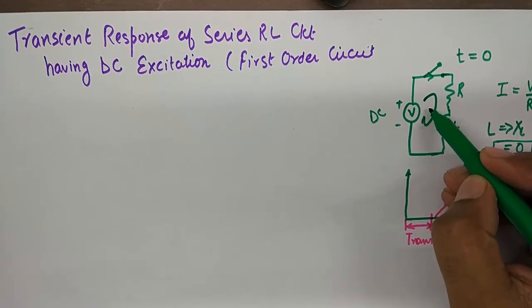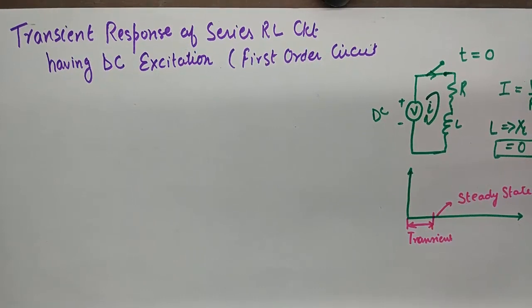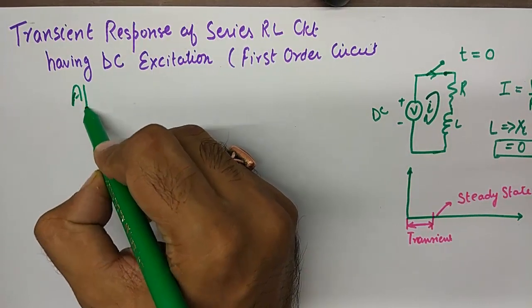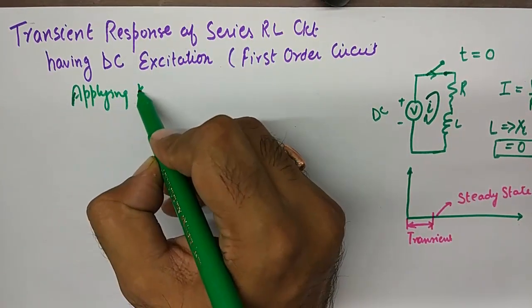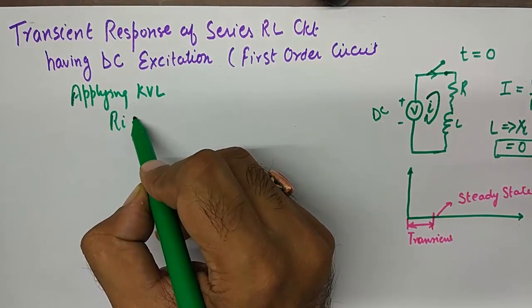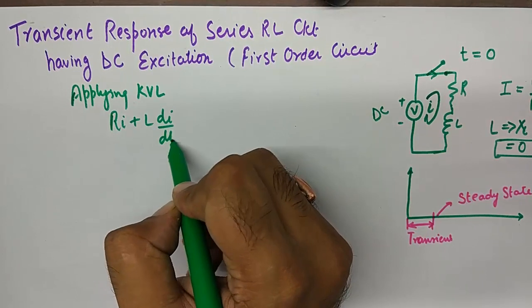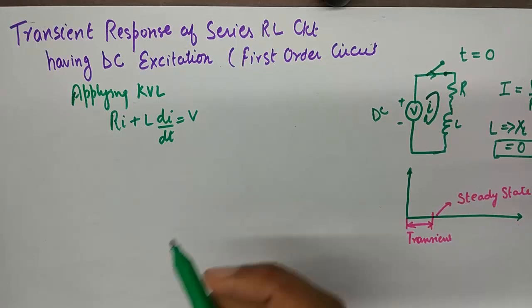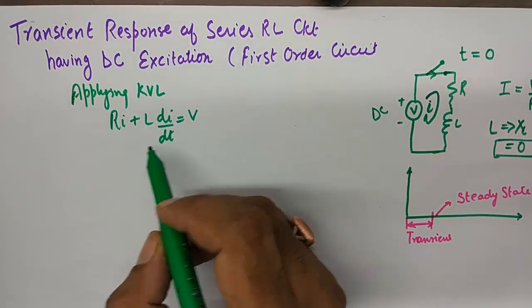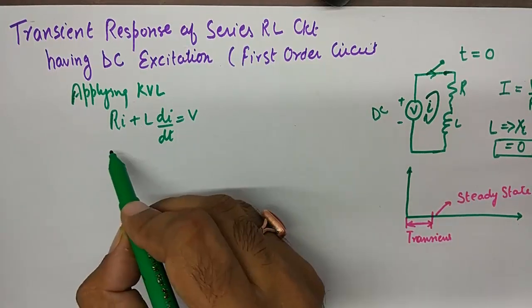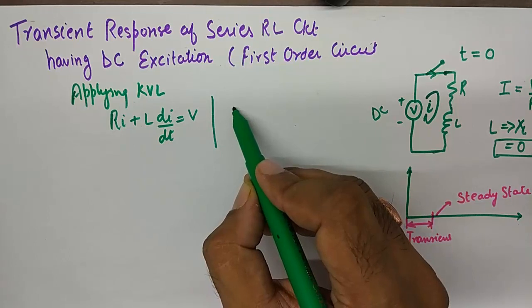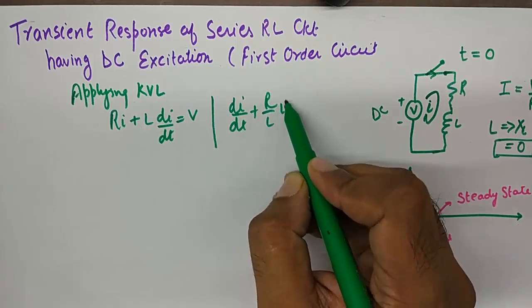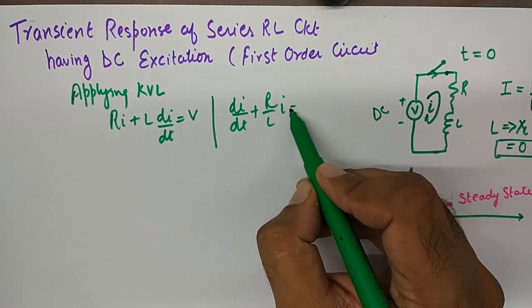We assume the current to be small i and apply Kirchhoff's voltage law. Applying KVL we get: R·i + L·(di/dt) = V. This is the total voltage equation for the circuit. Dividing everything by L, we get: di/dt + (R/L)·i = V/L.